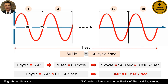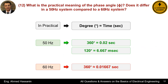So, one cycle equals 360 degrees, which corresponds to approximately 0.01667 seconds. Therefore, in a 60 Hz system, 360 degrees represents a duration of 0.01667 seconds in practice. The phase angle phi represents a period of time in practice, and this time duration has different values in 50 Hz and 60 Hz systems. For a 50 Hz system, 360 degrees corresponds to 0.02 seconds, meaning that 120 degrees is approximately 6.667 milliseconds. However, in a 60 Hz system, 360 degrees corresponds to approximately 0.01667 seconds.